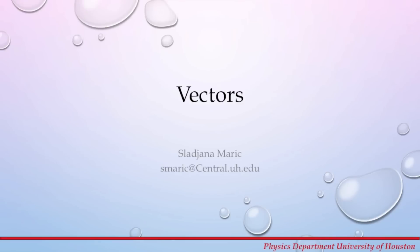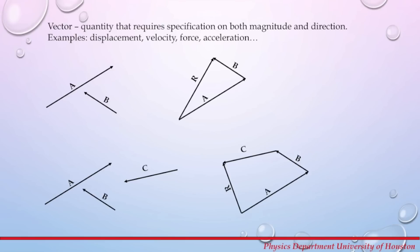Hello, this week we will perform an experiment on vectors. For many physical quantities, the direction of a quantity is just as important as its magnitude. So a vector is a quantity that requires specification of both magnitude and direction, while scalars only have a magnitude.